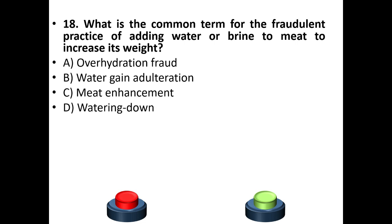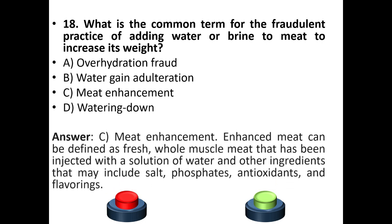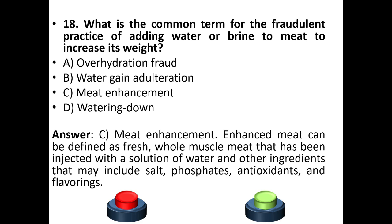Eighteenth question: What is a common term for the fraudulent practice of adding water or brine to meat to increase its weight? Options: over-hydration, water gain, adulteration, meat enhancement. The answer is option C — meat enhancement. Enhanced meat is defined as fresh muscle meat that has been injected with a solution of water and other ingredients, which may include salt, phosphates, antioxidants, and flavorings.